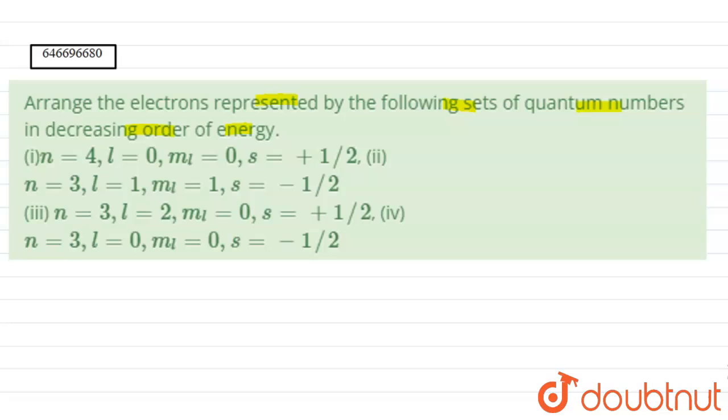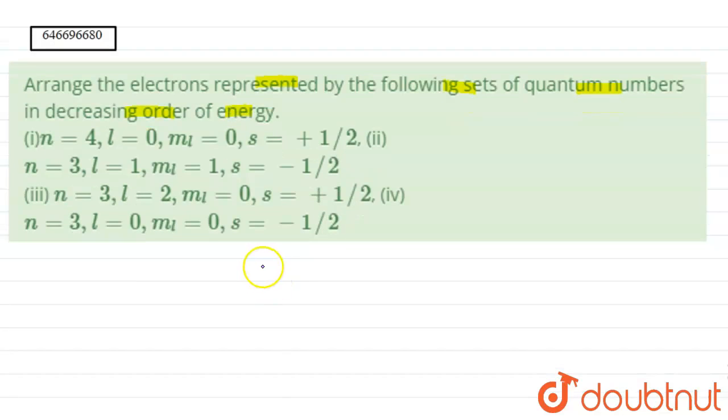So how to decide which quantum number has the maximum energy? First rule is n plus l. We will check the value of n plus l, and n plus l will be directly proportional to energy. Higher the n plus l value, higher will be the energy.